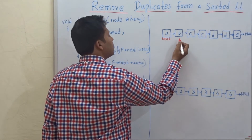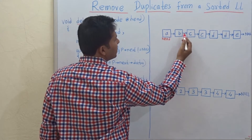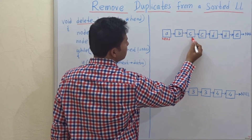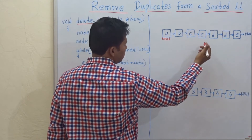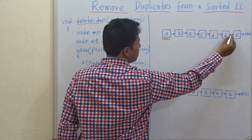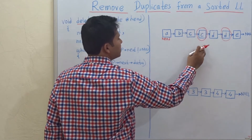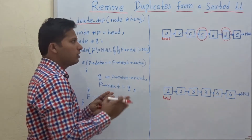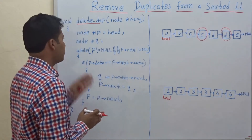Let's check what the duplicate elements are. A is not duplicate, B is not duplicate, C is duplicate — so we have to remove one of those nodes. D is also duplicate, so we have to remove one of those nodes as well. These are the two nodes we need to remove. Let's see how to do this using the code.